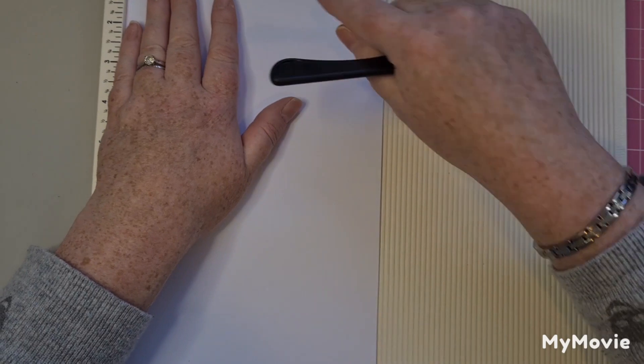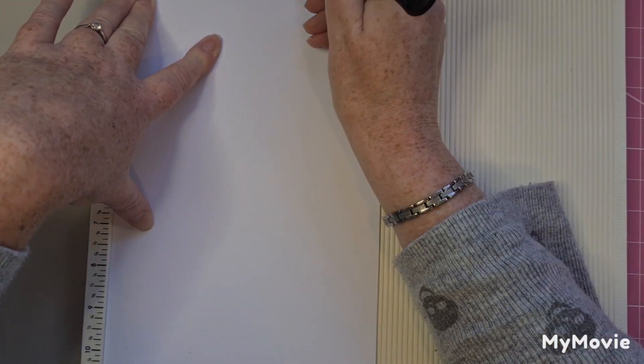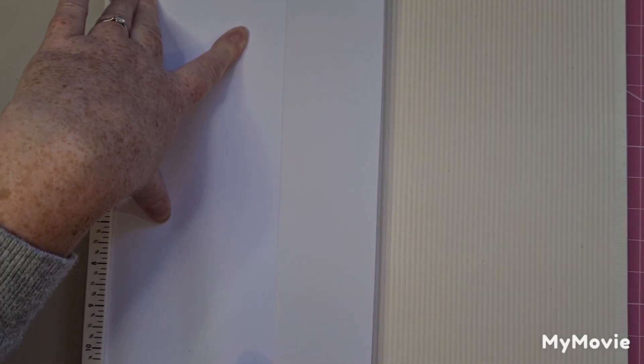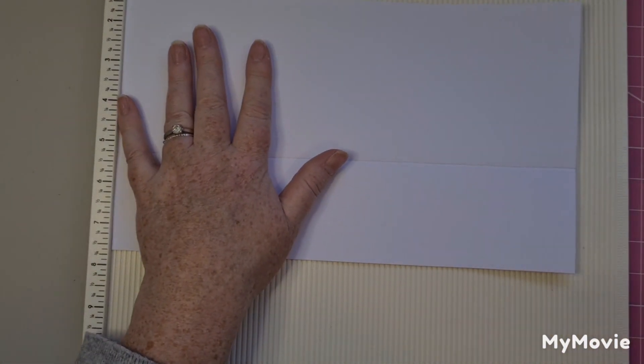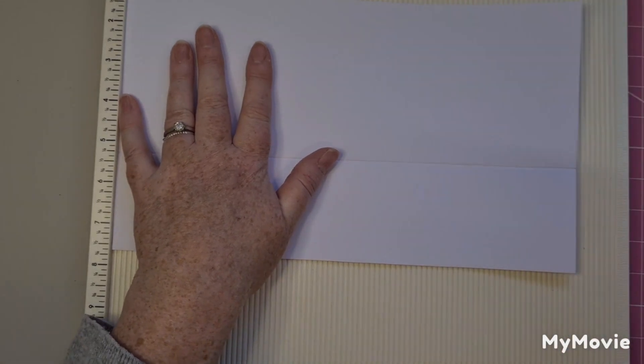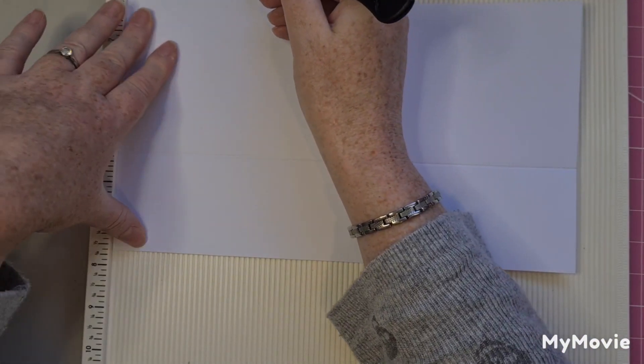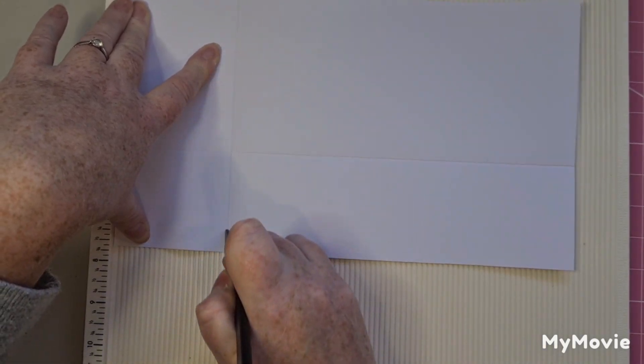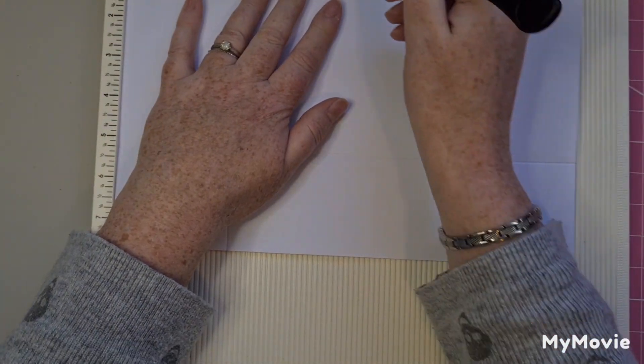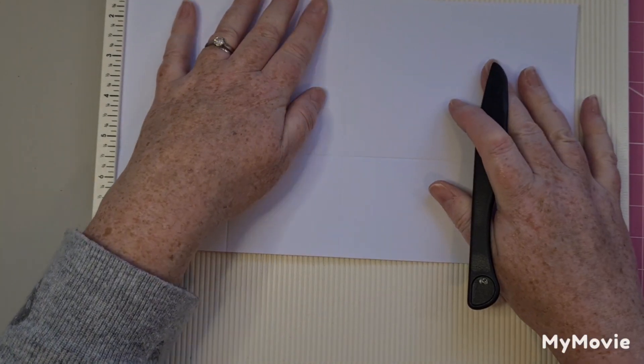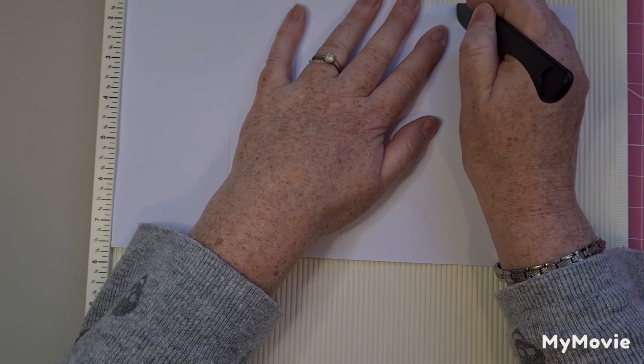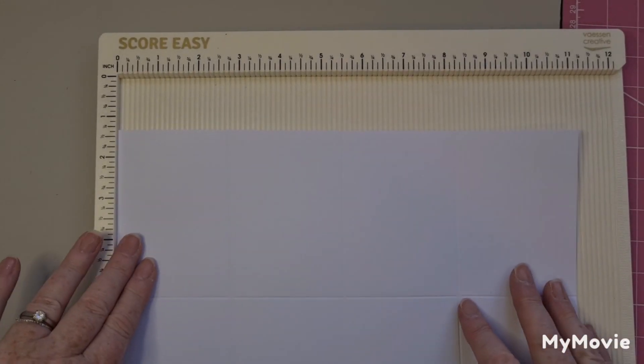The first score is on the shorter side, I'm going to score at four inches. It's going to make my pocket and then I'm going to rotate it around and score at the first one is two and three quarters, and then five and a half and then eight and a quarter.